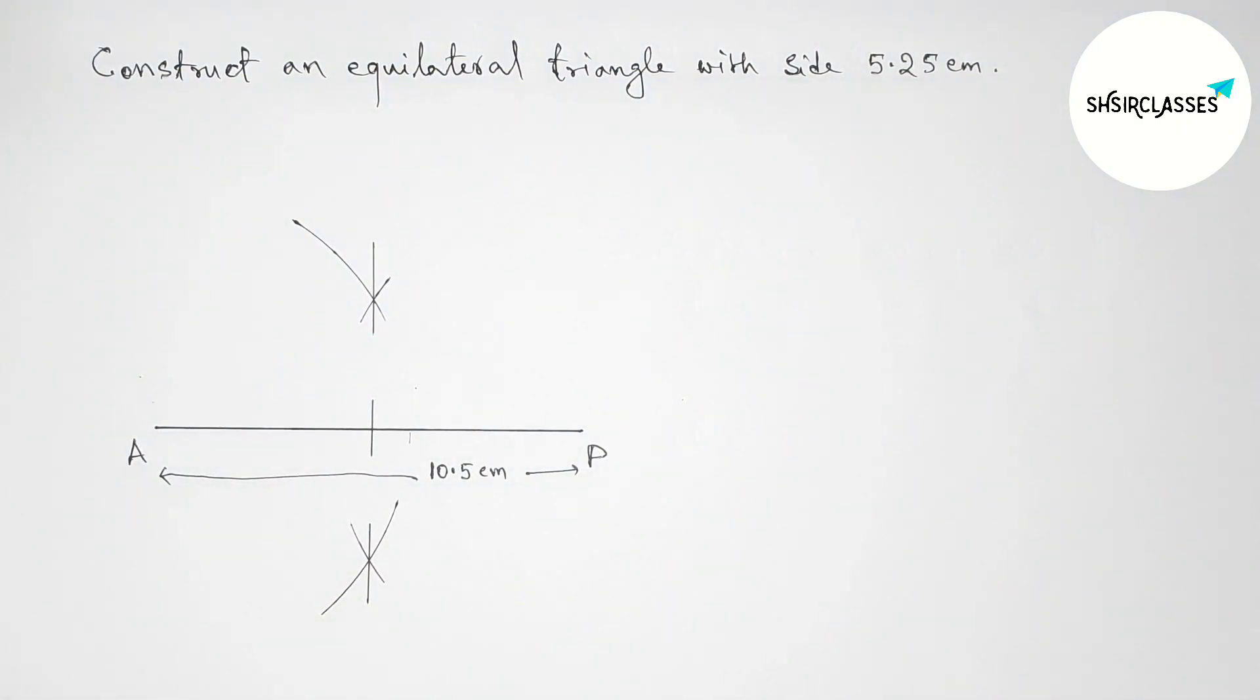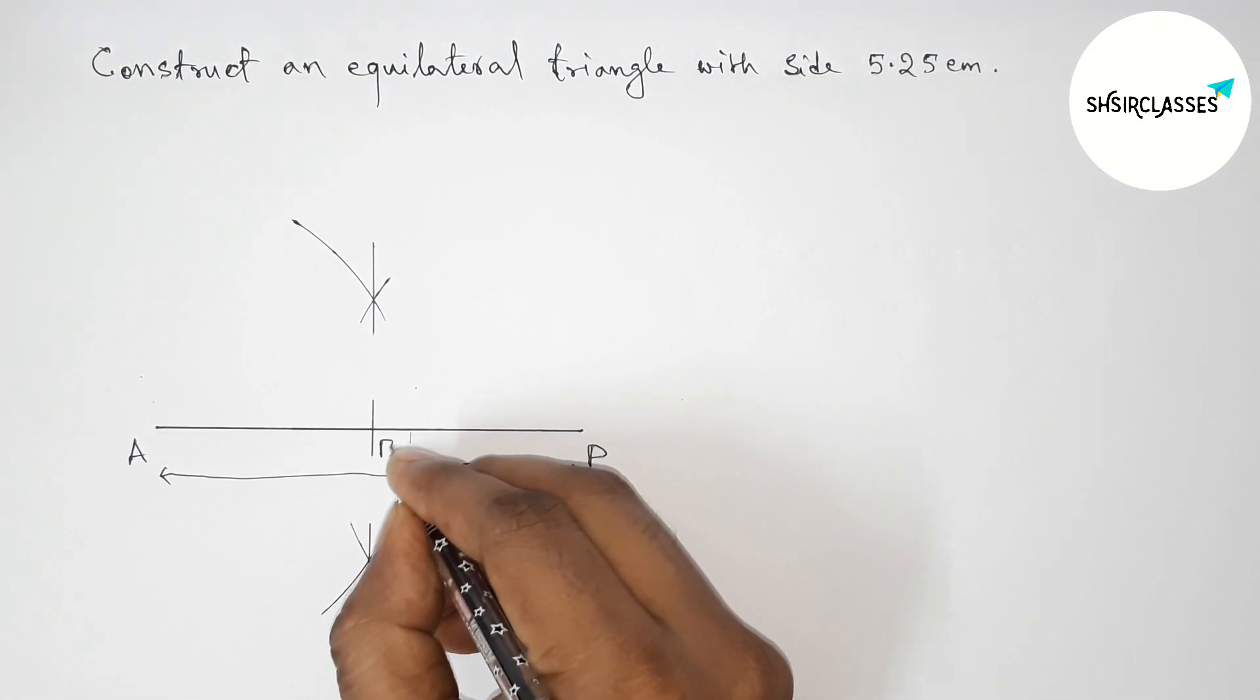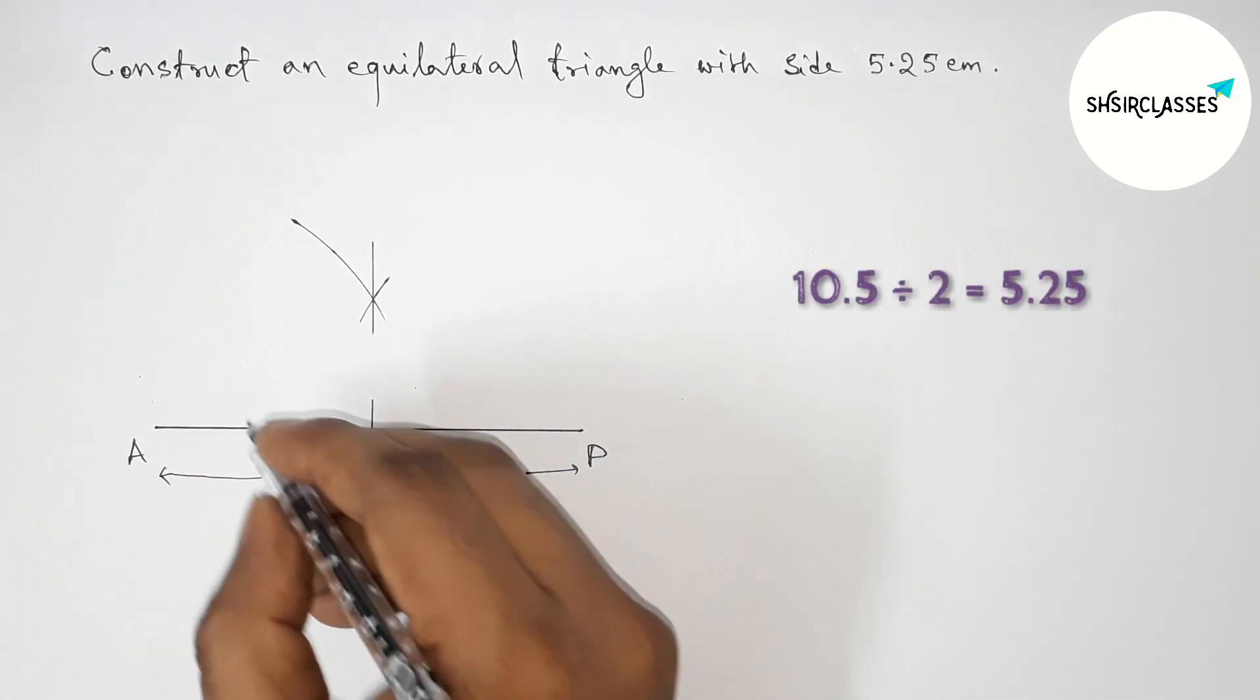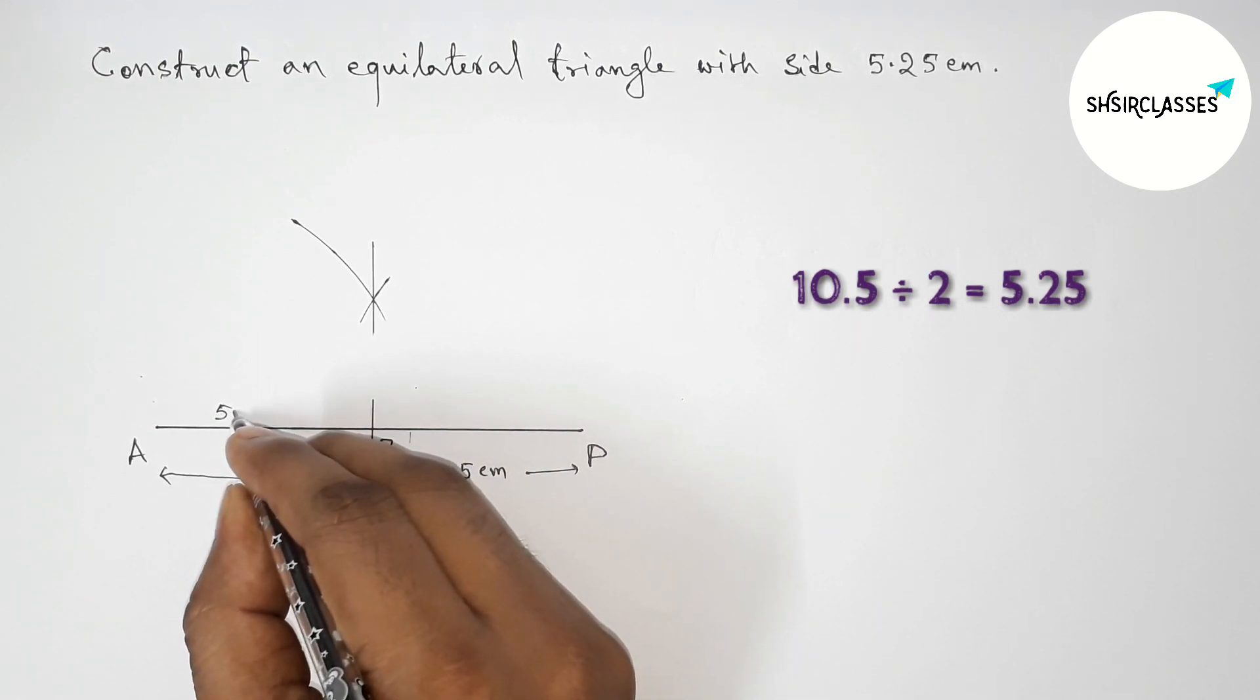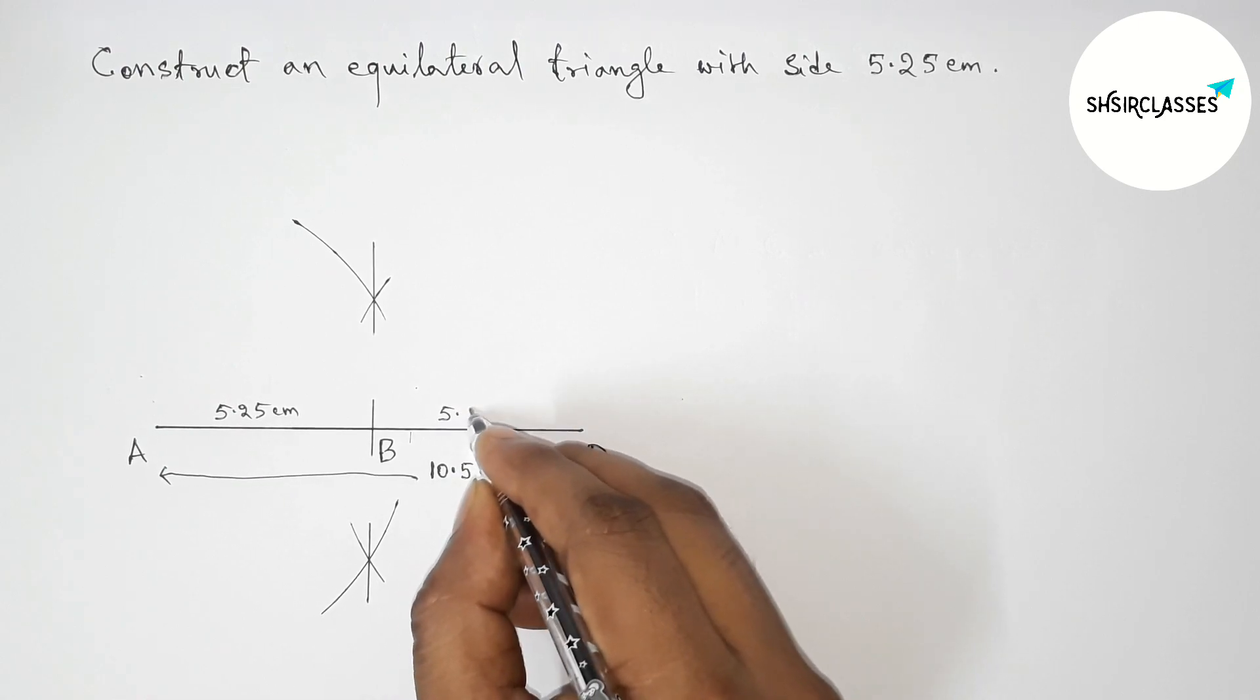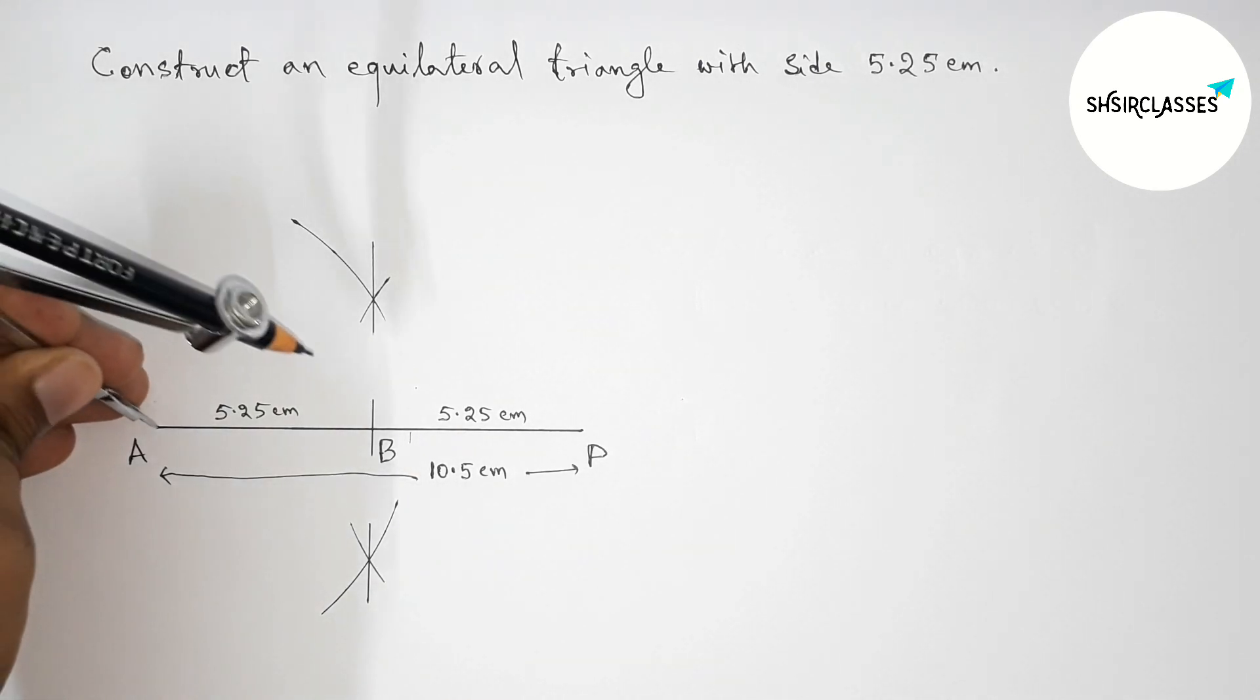This bisects the line AP at a point, so here taking point B. Now the length of AB, that is 5.25 centimeters, and BP is also 5.25 centimeters. Next, taking the length AB with the help of compass.